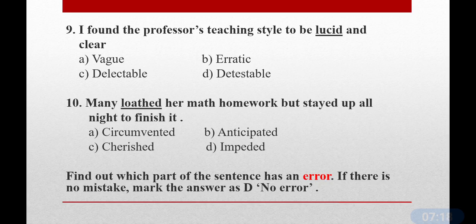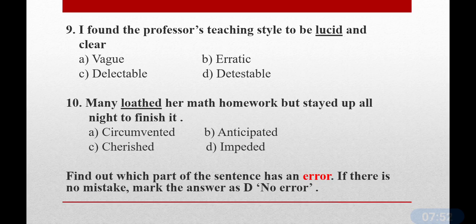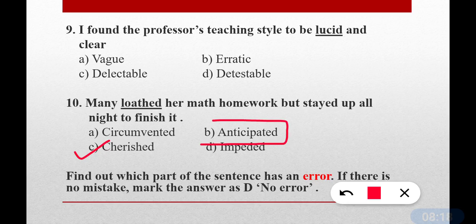Question number nine: I found the professor's teaching style to be lucid and clear. Lucid means clear, vivid — these are synonyms of lucid. Its opposite meaning is vague — option A is correct. Vague means unclear, cloudy, indefinite. Question number ten: Many loathed her math homework but stayed up all night to finish it. The correct antonym answer is option C — cherished. Loathed means hated; cherished means loved. Anticipated means expected.